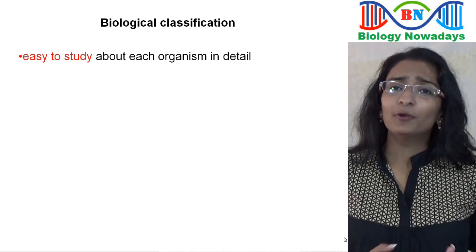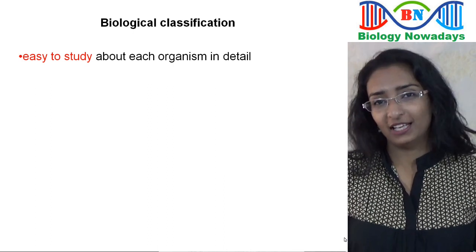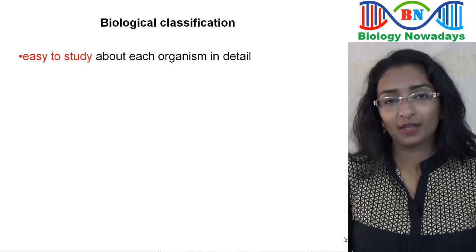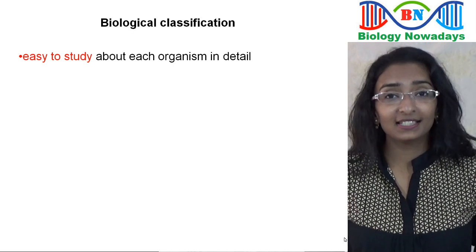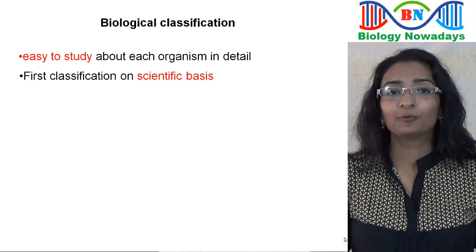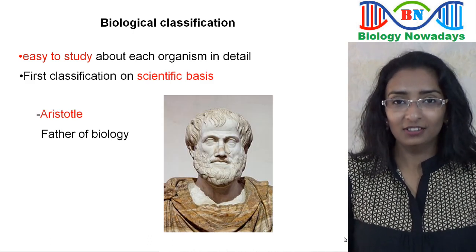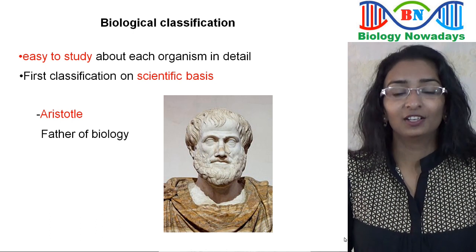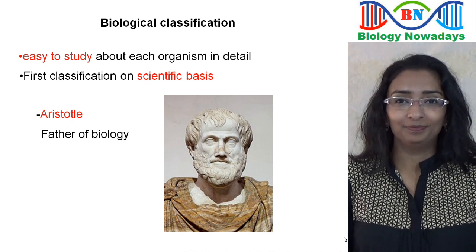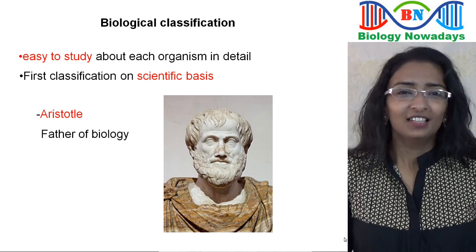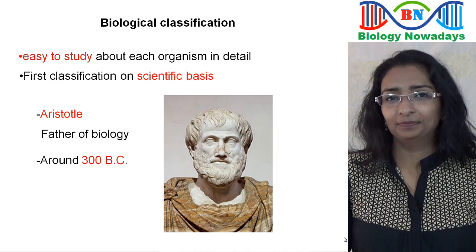Many attempts were made in the past to classify living organisms. But a classification on a scientific basis was first done by Aristotle, a Greek philosopher known as the father of biology. This was in around 300 BC.